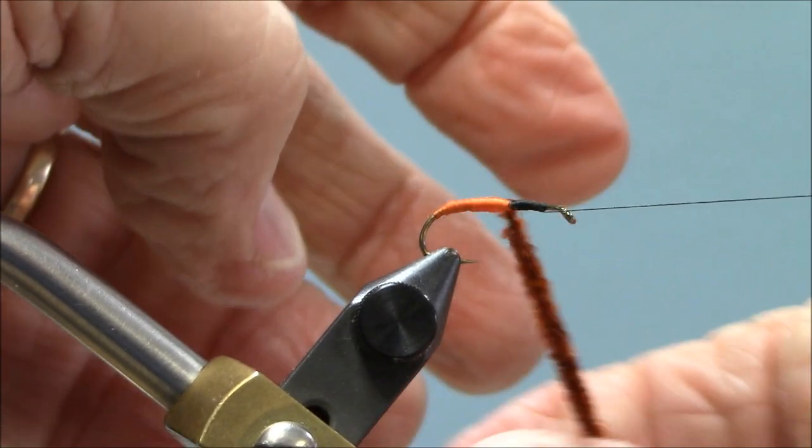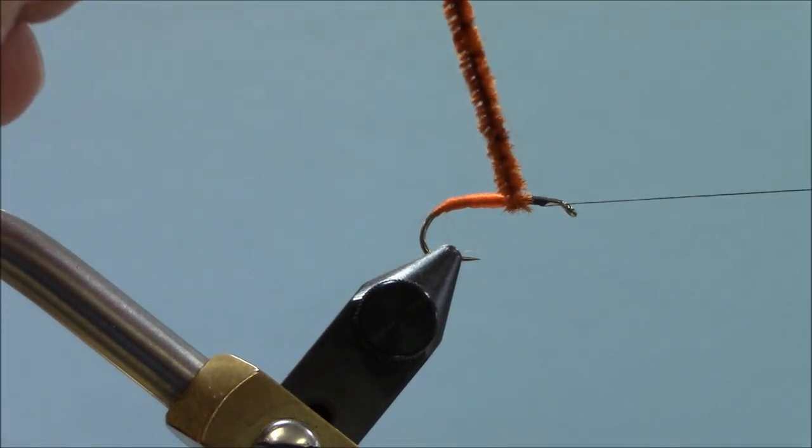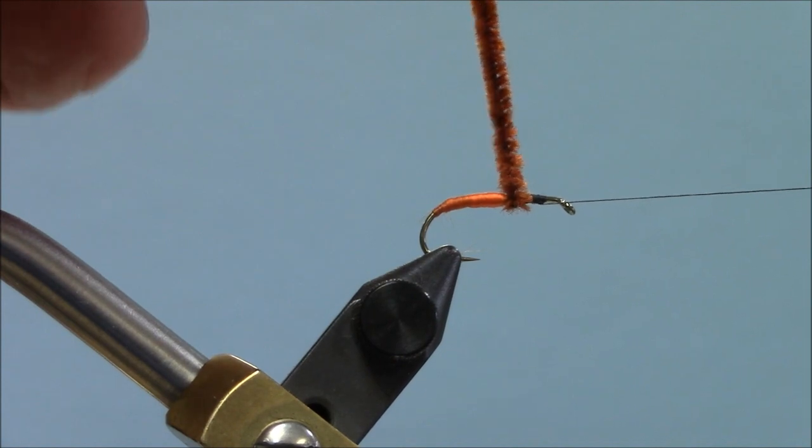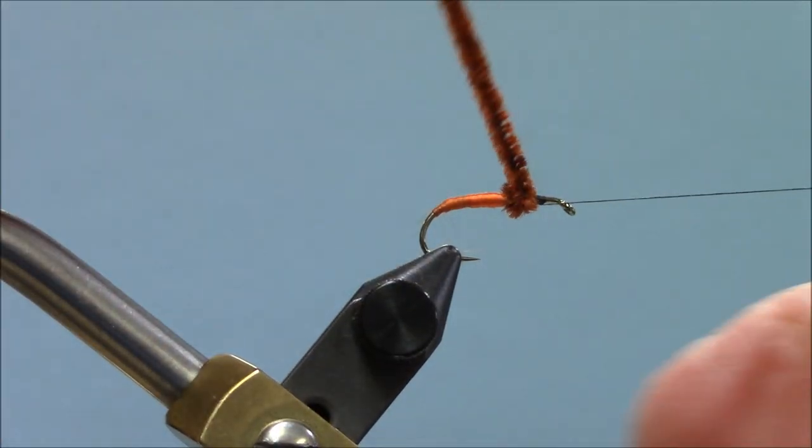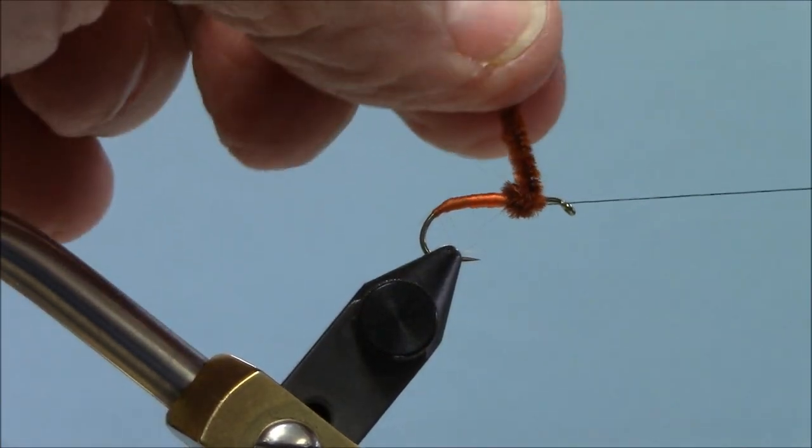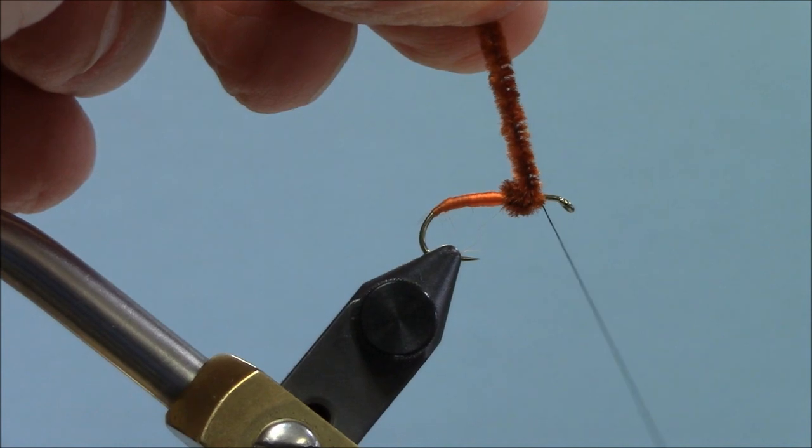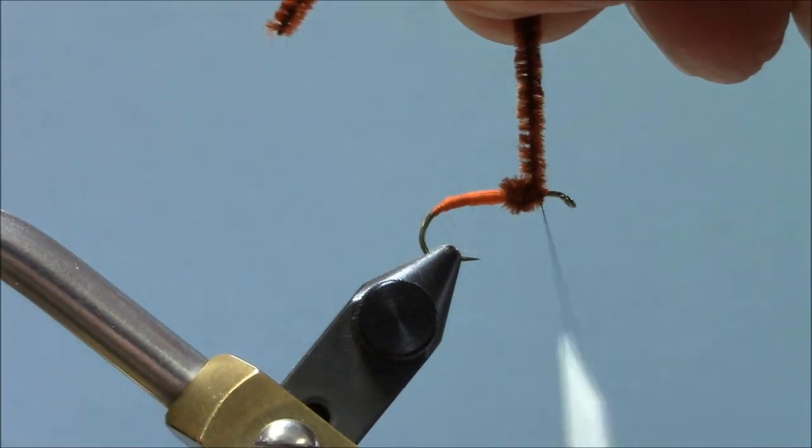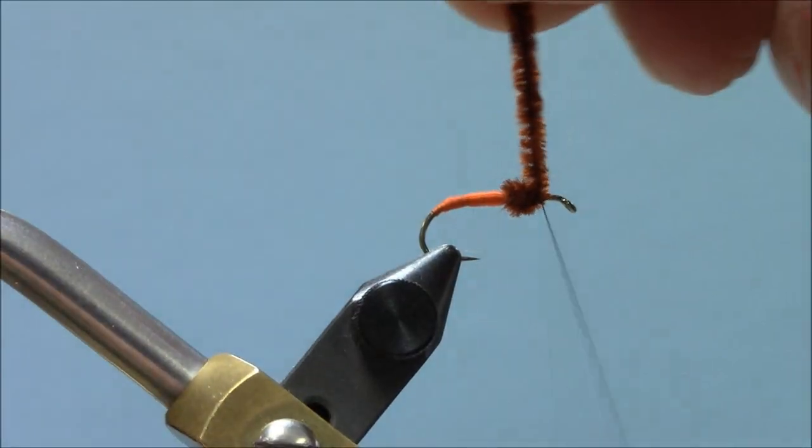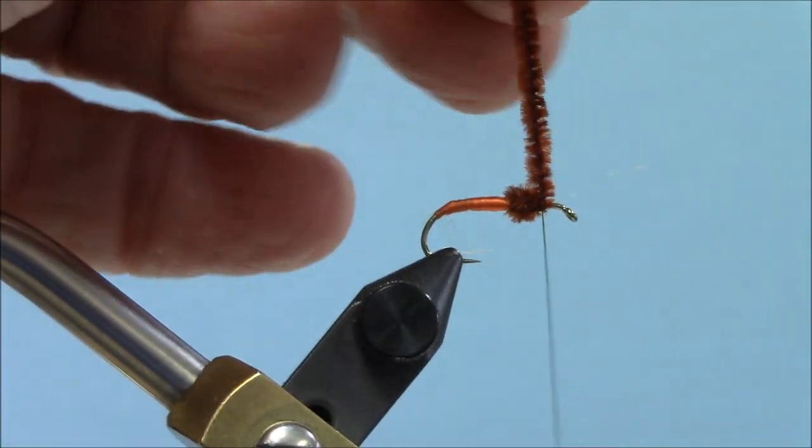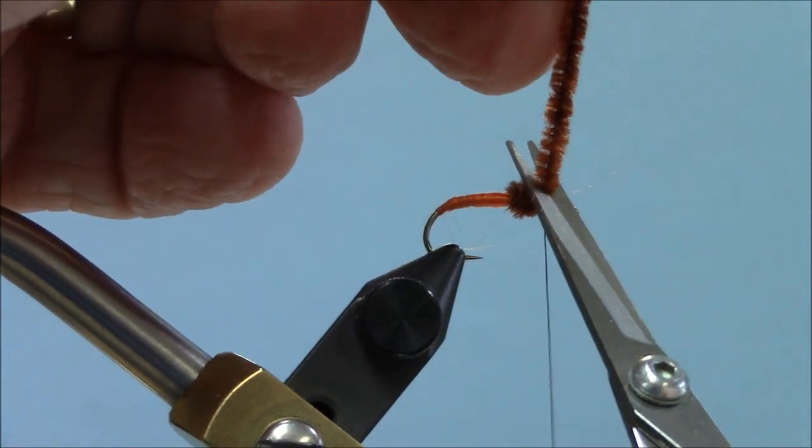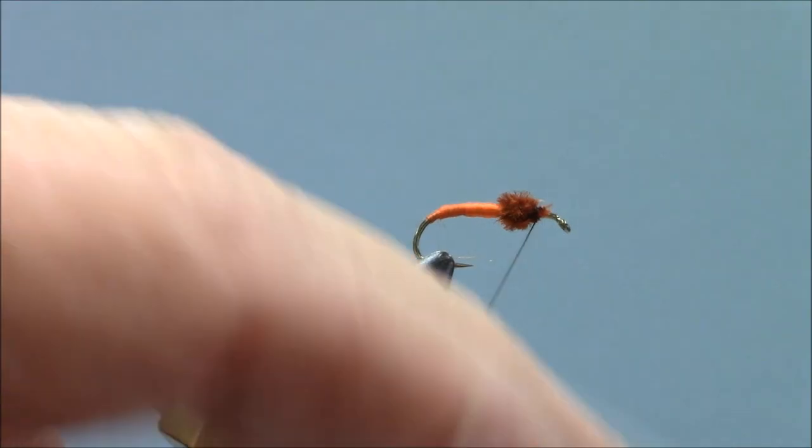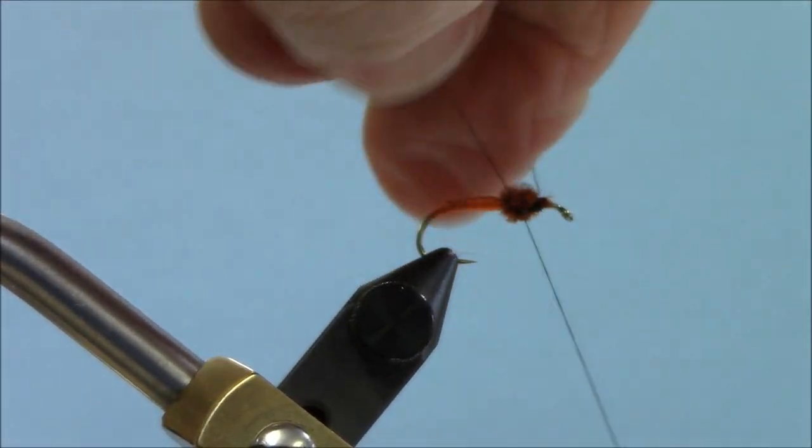Then I'm going to go forward and half hitch that again to get my thread out of the way. Now the purpose of this chenille is to make a little bit of a thorax. On a size 10 hook, you probably don't want more than maybe two or two and a half wraps. There's one, there's two, and there's about two and a half. Notice I've tried to keep it back from the eye. When I bring my bobbin up, I don't want that chenille to edge forward. I want to keep that little hump right where it is, right in the middle. Then I'm going to trim that and half hitch it as well because I hate it when something starts coming apart.